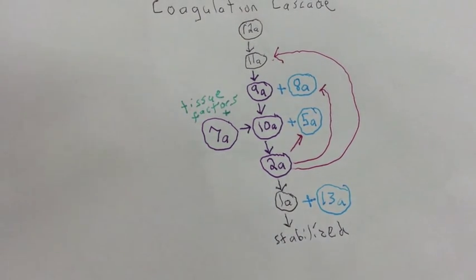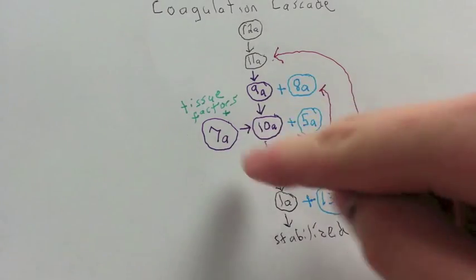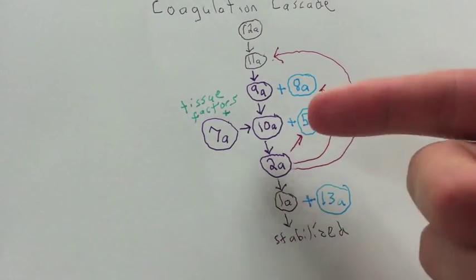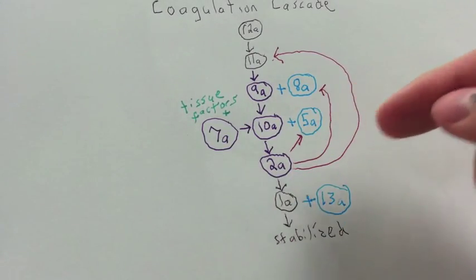And the nice thing about this figure is that you have these purple grouping here. These four purple ones, 2, 7, 9, and 10, these require vitamin K in order to work. And that's why if you have a vitamin K deficiency, you end up with a bleeding disorder, because your cascade is no longer functioning correctly to clot properly.